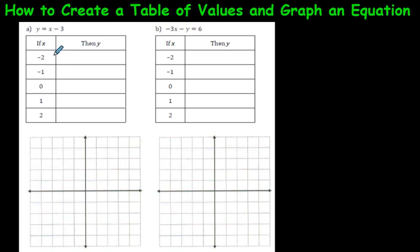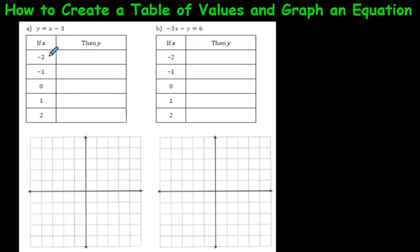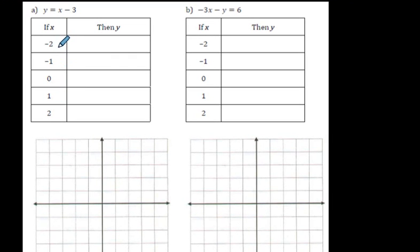We've kind of cheated by already having a table set before us here. These numbers — negative 2, negative 1, 0, 1, and 2 — are just placed there already. We could have picked any numbers we want. But we're going to use these because they fit nicely along the x-axis. We're going to see what happens when we substitute them into this equation.